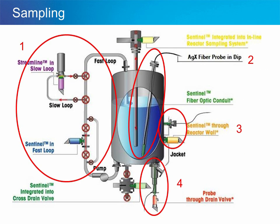Now let's talk about how we actually sample a vessel, or perhaps a stream or pipe, in a continuous process. There are many ways to do this, but I have circled 4 that are by far the most common in our experience. Number 1 shows sampling in a stream or loop. Number 2 shows sampling by putting a silver halide fiber probe into a dip pipe and inserting it through a nozzle at the top of the vessel. Number 3 shows probes inserted directly through the vessel wall, which is usually only practical if the vessel was designed with these inserts in mind. Number 4 shows a probe going through a drain valve, which has turned out to be a rather convenient way to sample large tanks.